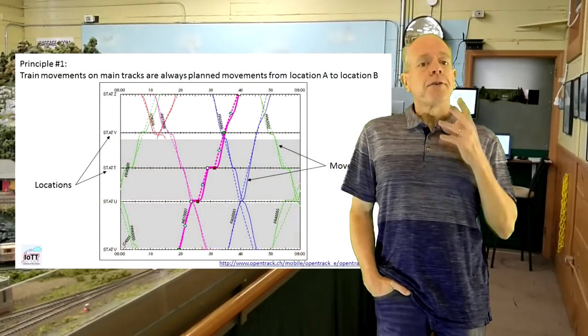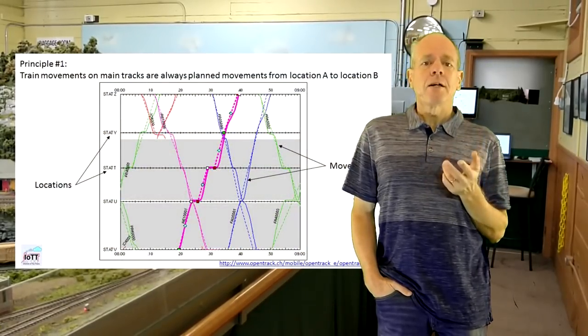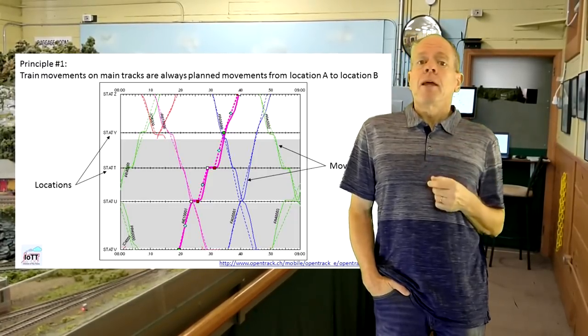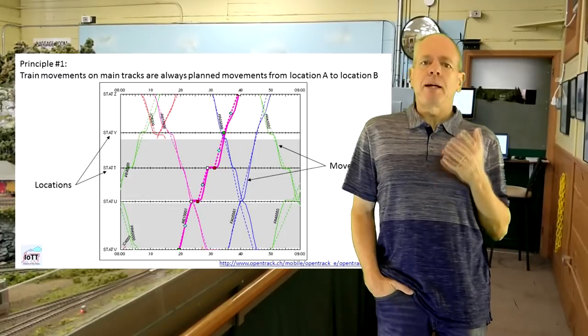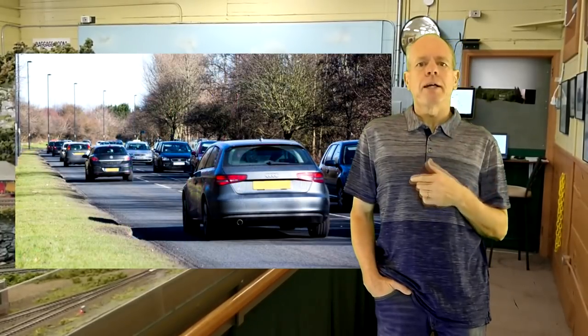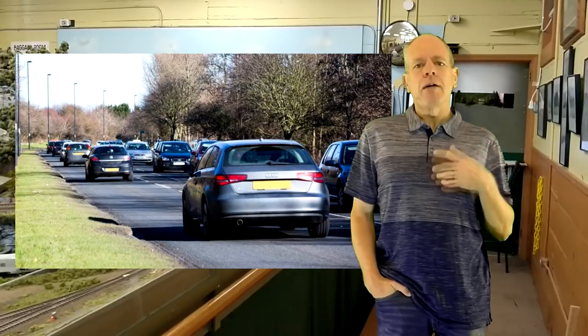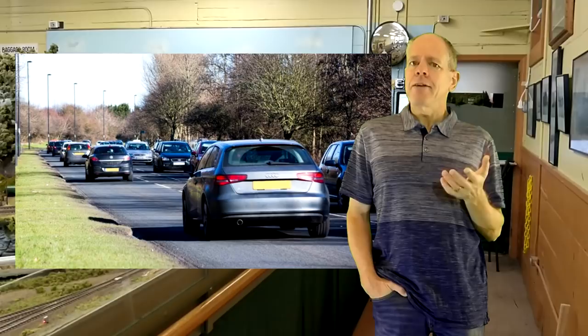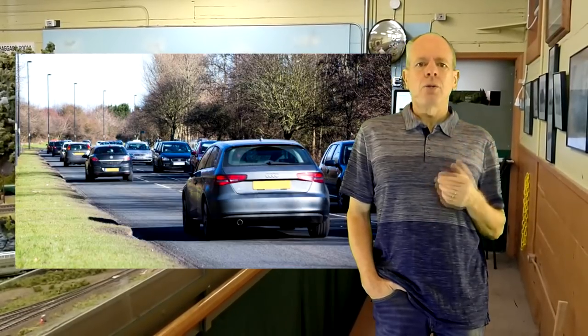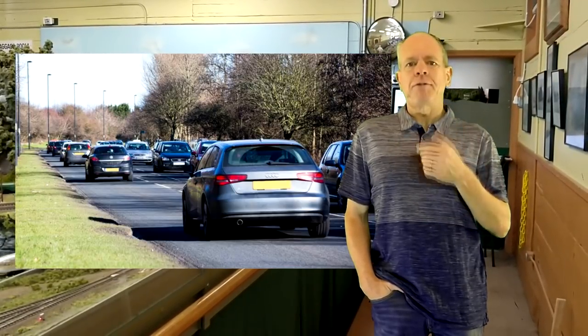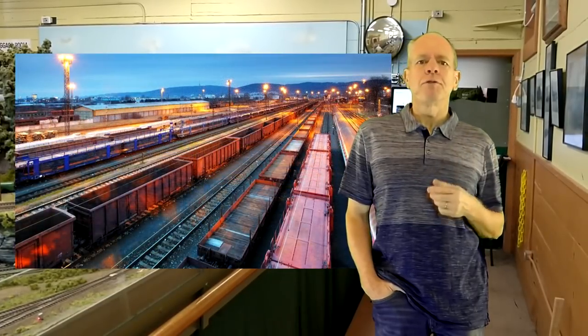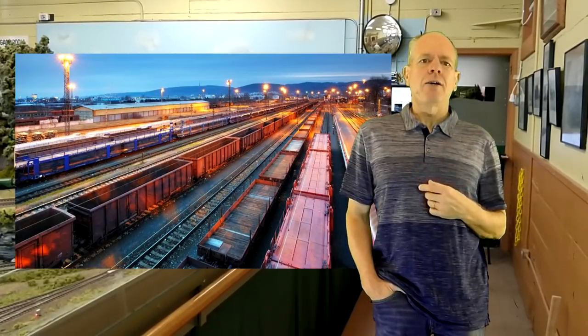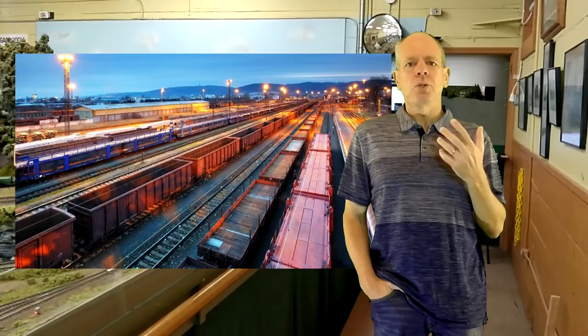To deal with these problems, railroad signaling employs two concepts that are fundamentally different from signaling in road traffic. Here is the first. Train movements on main tracks are always planned movements from location A to location B. Look, when I want to go somewhere with my car, all I need to do is hop in the car and go. And as I go, I watch the traffic around me and react as needed. I slow down, accelerate, go with the flow, and when the road narrows, I may stop and let other traffic pass. Of course, this is not possible if you are running a 15,000 ton freight train.